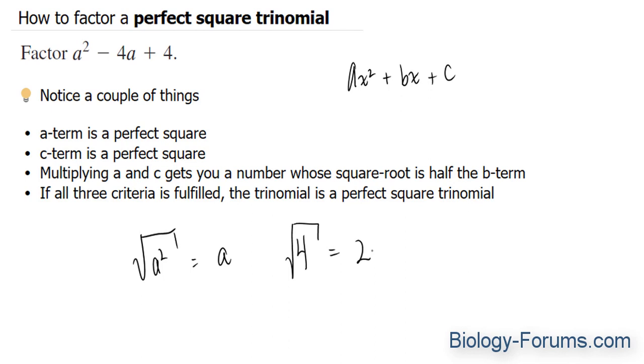So let's identify, once again, the a and the c term. The a term is this one, and the c term is this one. Now, we're going to look at their coefficients. The coefficient of that first term is one. So we multiply one with four. One times four is equal to four.